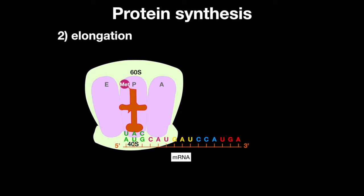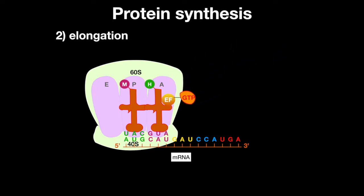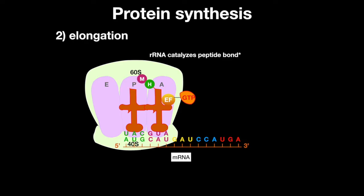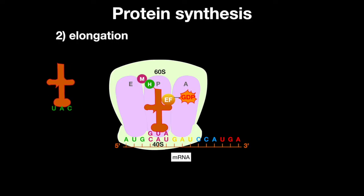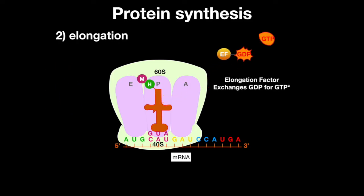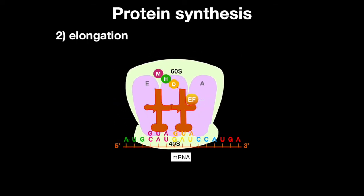Now elongation can begin. First, an elongation factor linked to GTP binds to the tRNA. The elongation factor brings the tRNA into the A site of the ribosome, unless it is a start codon, which goes straight to the P site. rRNA catalyzes the peptide bond formation between the two amino acids. GTP is hydrolyzed, which pushes the ribosome up towards the 3' end. The original tRNA stays in the E site transiently before it leaves the ribosome. Then the elongation factor disassociates and exchanges its GDP for a GTP. The renewed elongation factor can then bind to the next tRNA, and the cycle repeats, elongating the peptide as it reads the mRNA.